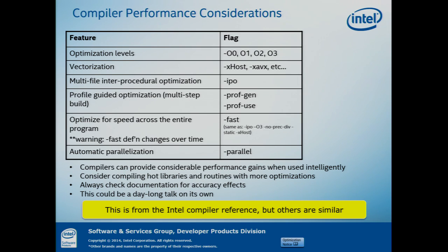If you use a compiler intelligently, you can get a lot of performance gain very cheaply. If you haven't done anything to your makefile for performance, this is definitely something you want to look at. You can also consider using these flags only on the hot libraries and hot routines — you don't have to compile the whole program with all of these flags. Most compilers support binary compatibility, so you can compile one file with some optimizations and others differently. Be aware that a compiler can do a lot of performance optimization for you. This table is from the Intel compiler, but there are similar flags on other standard compilers.